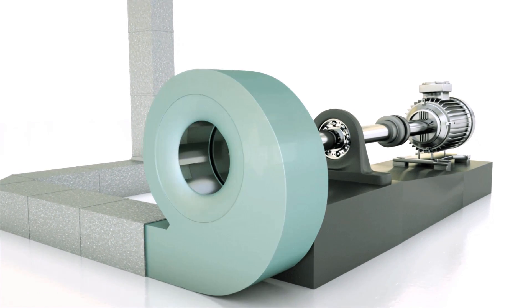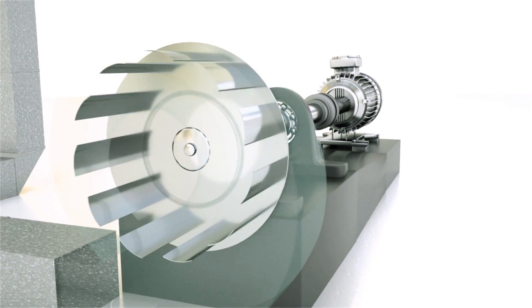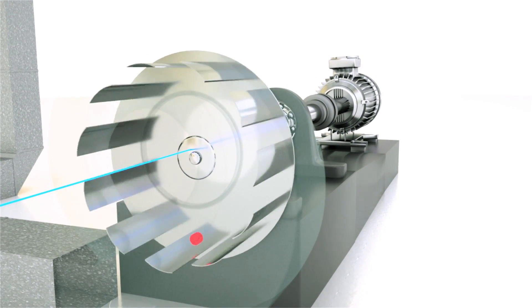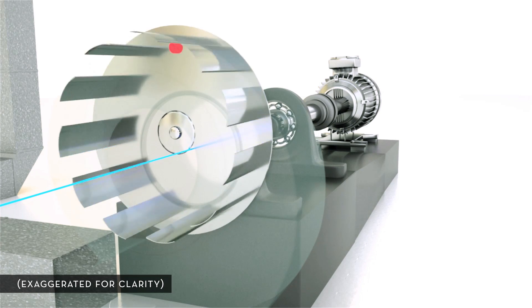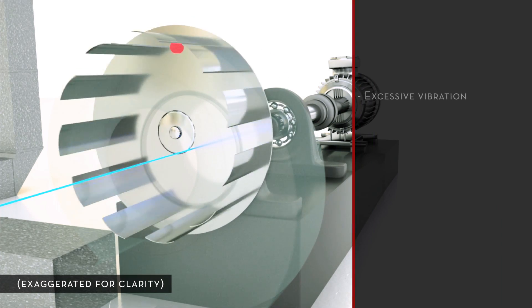Rotational unbalance occurs when there's an uneven distribution of mass around an axis of rotation. It can give a rotating machine element eccentric movement which can cause excessive vibration.